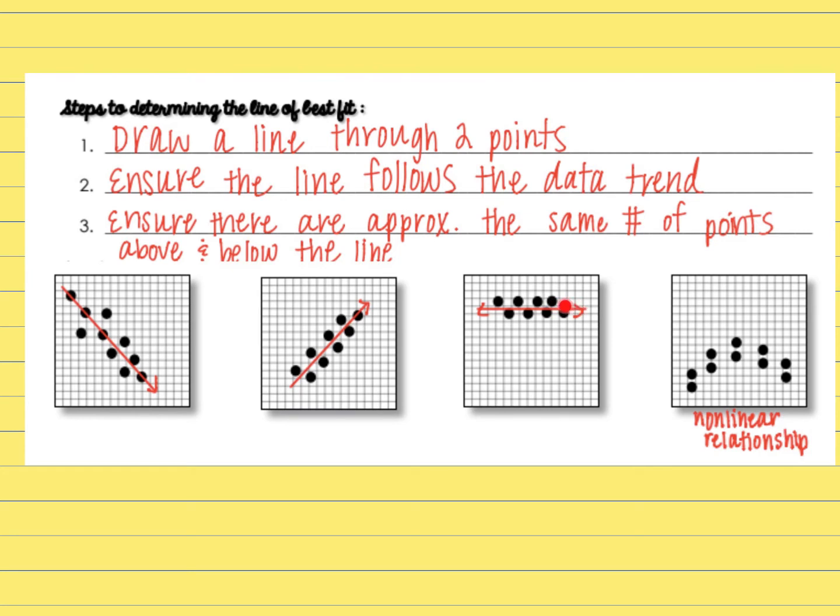The third one is an example of a zero slope because it's forming a horizontal line. This last graph is nonlinear. I could draw a line through the middle of the points, but it would make a curve or a bend. And today we're focusing on strictly straight lines.